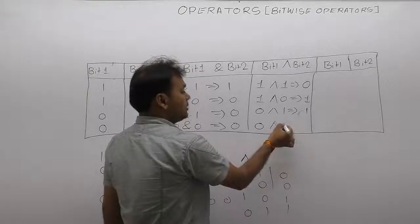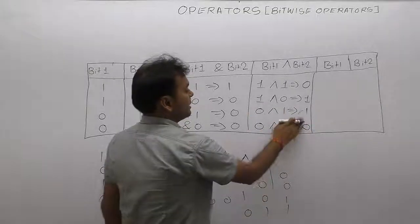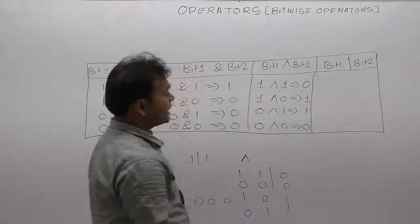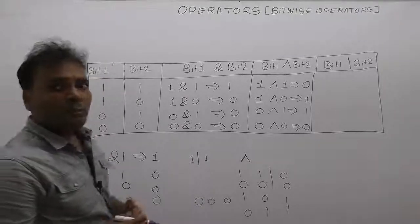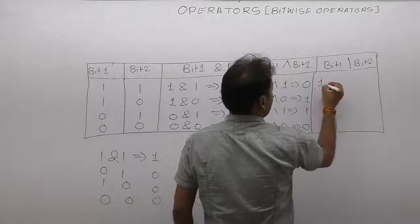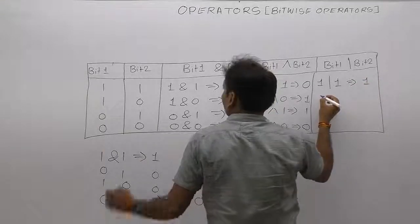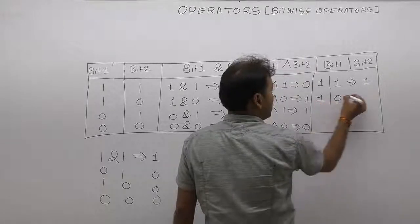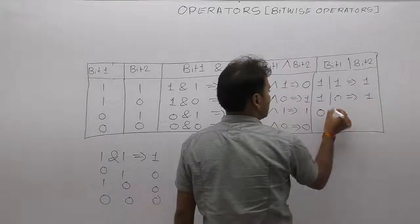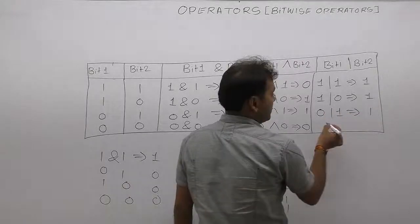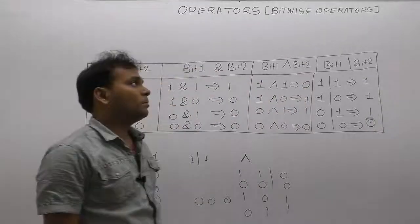Last XOR case: zero XOR zero — both are same, so result is false, meaning zero. For OR operator: if any bit is different or one is found, the resultant bit is one. First case one OR one is true, result is one. Second case one OR zero, result is one. Third case zero OR one, result is also one. Otherwise zero OR zero is zero.